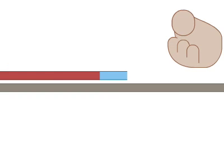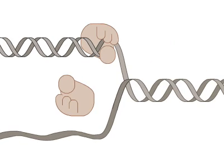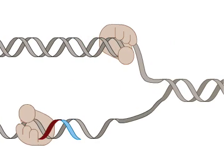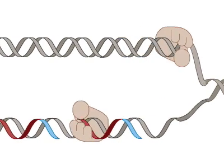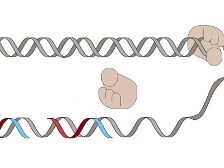Though the leading strand is made continuously, and the lagging strand is made in Okazaki fragments, the process is simultaneous and continuous, and replication of each strand keeps up with the uncoiling of the parental DNA at the replication fork.